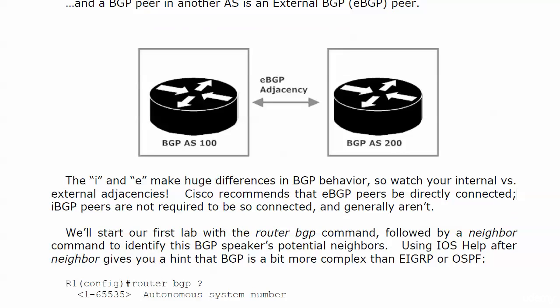Cisco recommends that eBGP peers be directly connected. iBGP peers are not required to be directly connected and generally will not be. We're going to start our very first adjacency in our first lab with the router BGP command, followed by a neighbor command to identify this BGP speaker's potential neighbors.